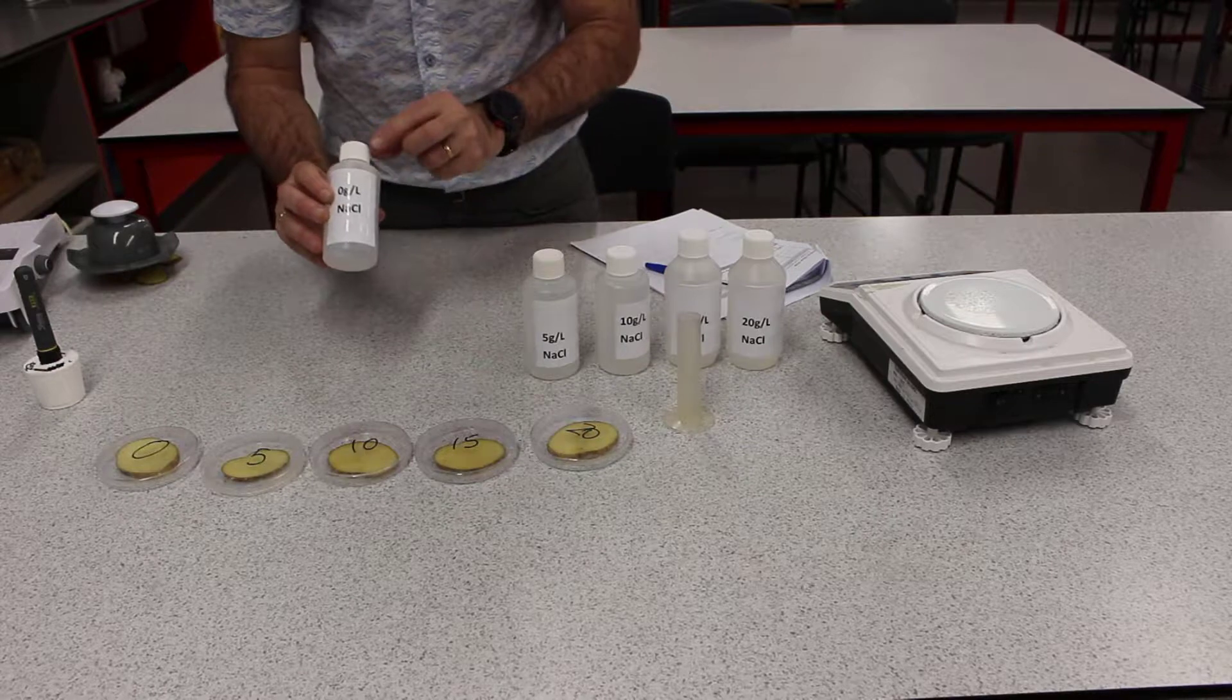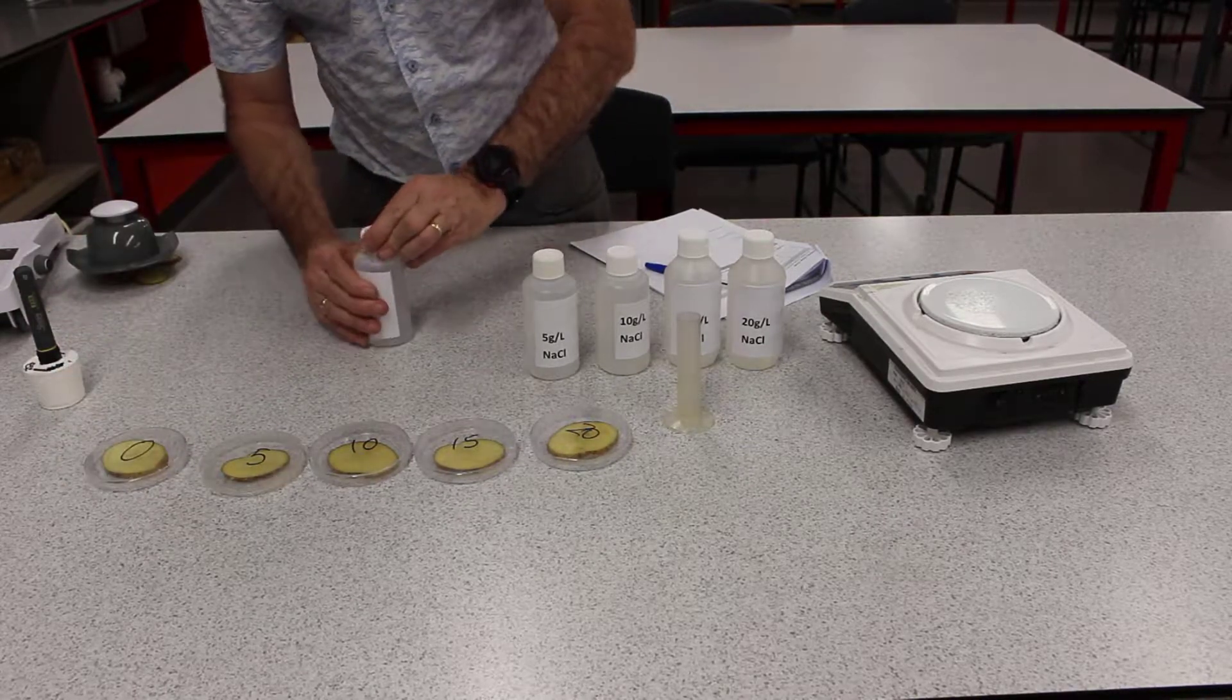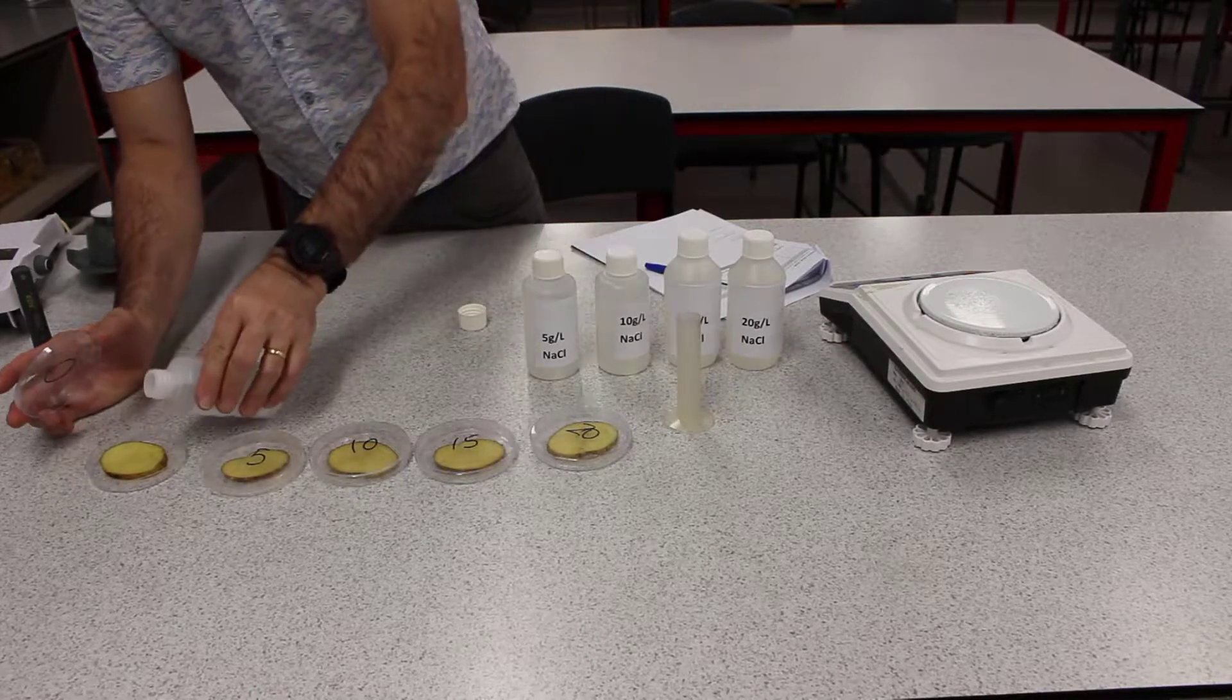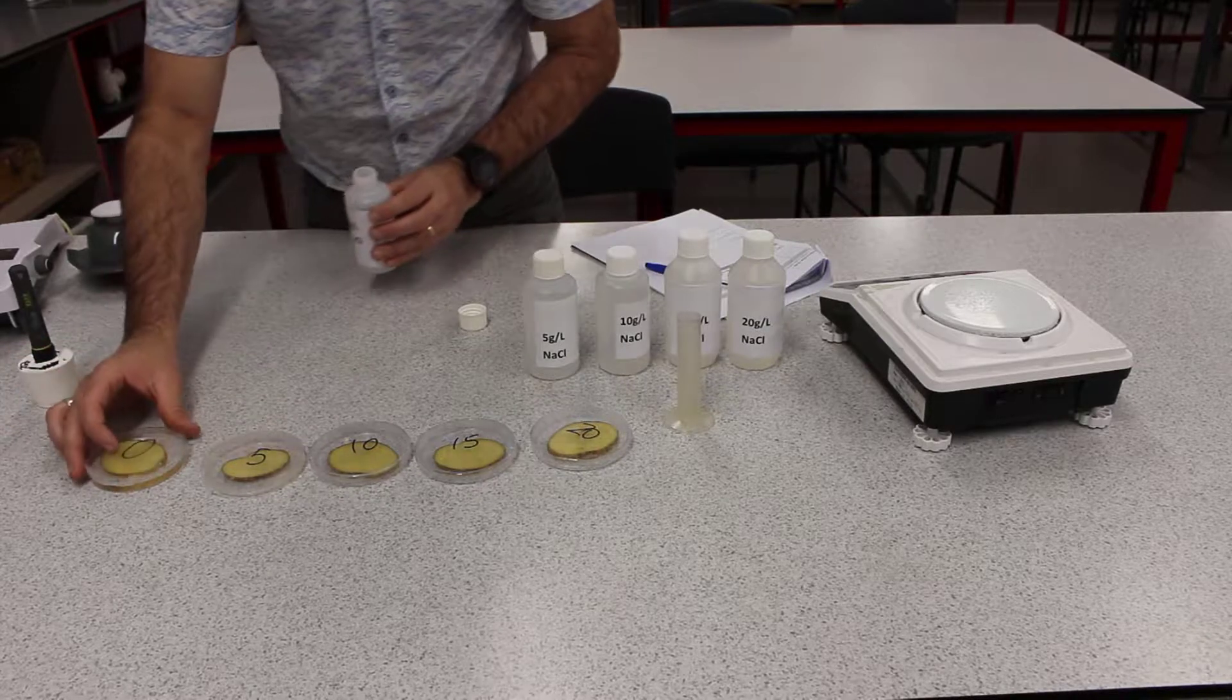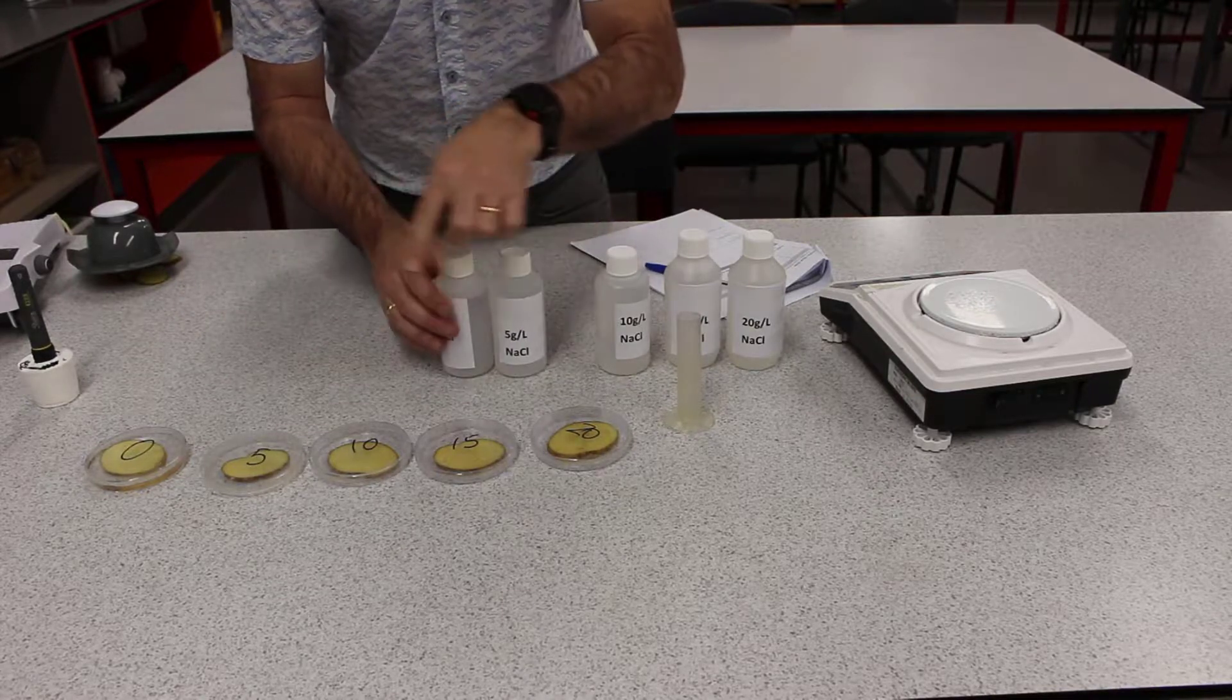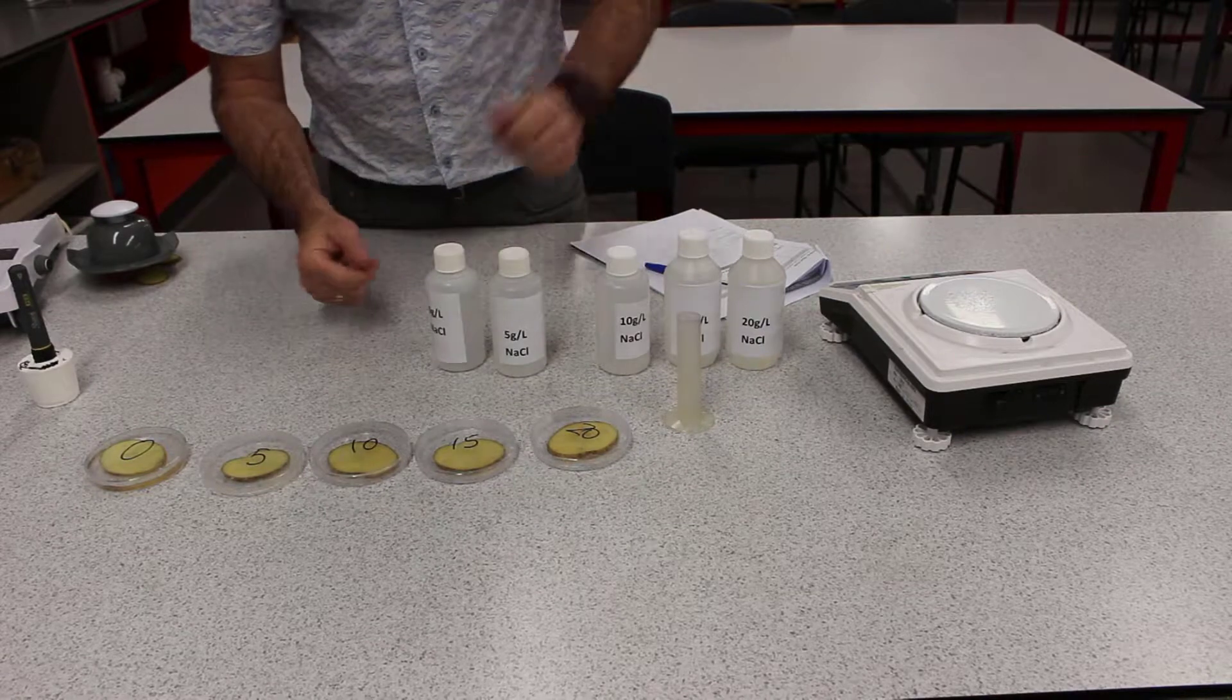So for the zero grams per litre, that's going to go on the one that says zero. Now, really all we need to do is just pour the solution in until the potato is fully submerged. It doesn't need very much and you're going to continue to do the same thing for each of them. I won't do them all now, but that's all we do for each of them.